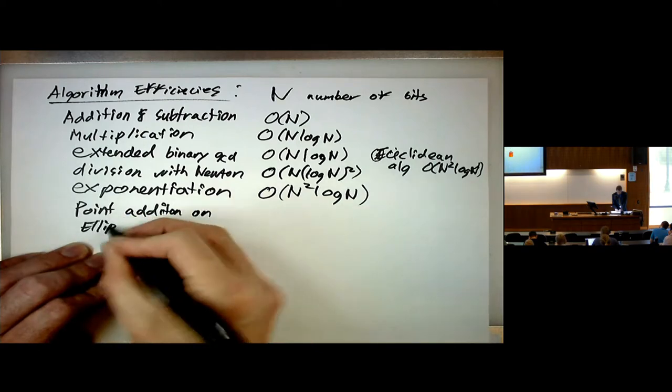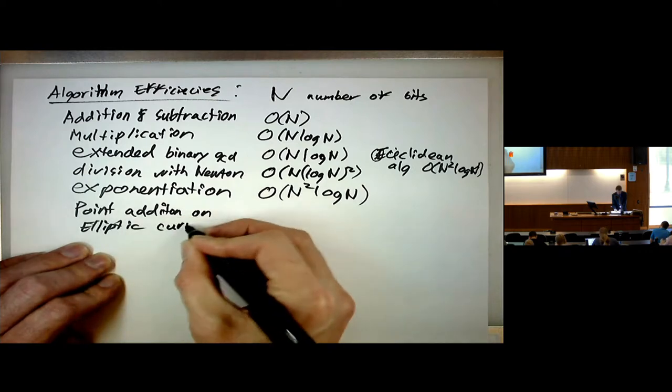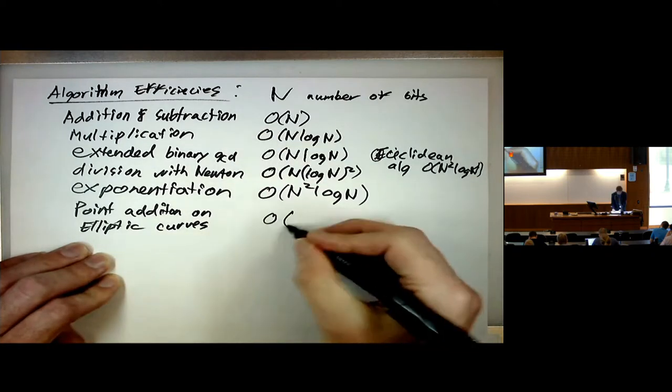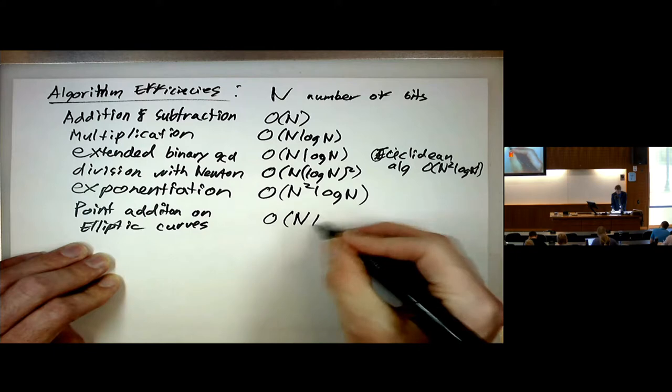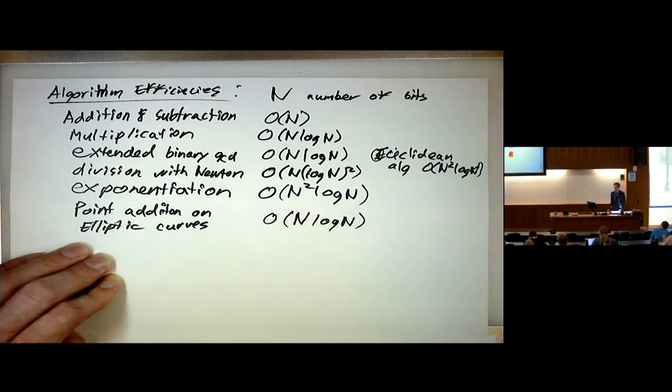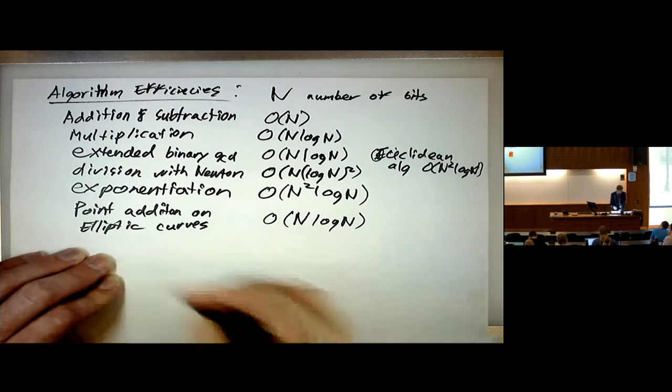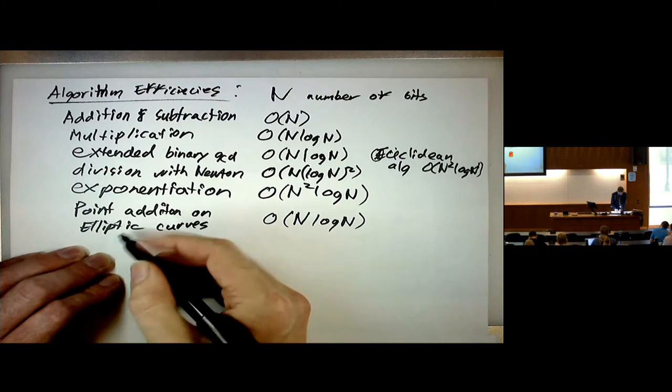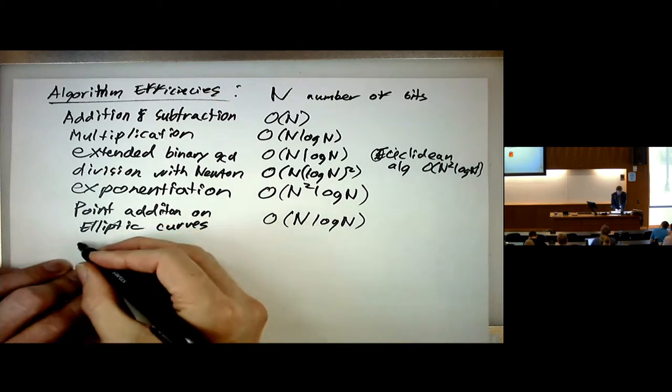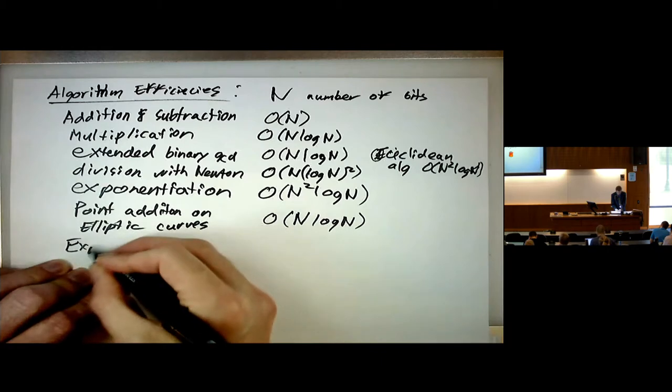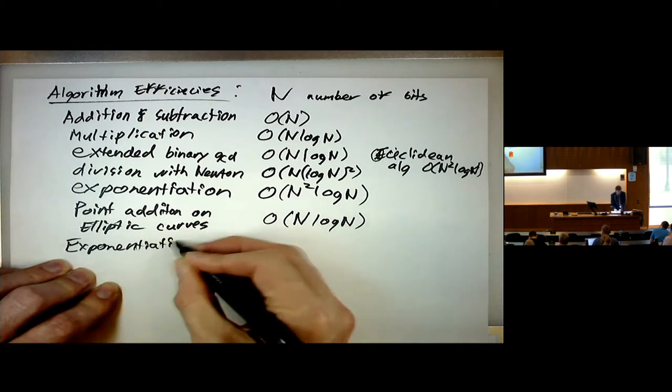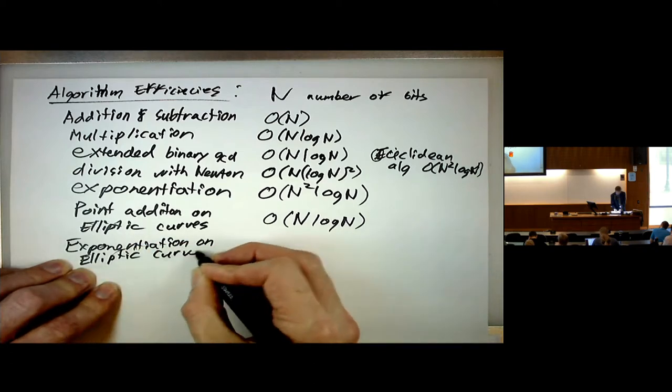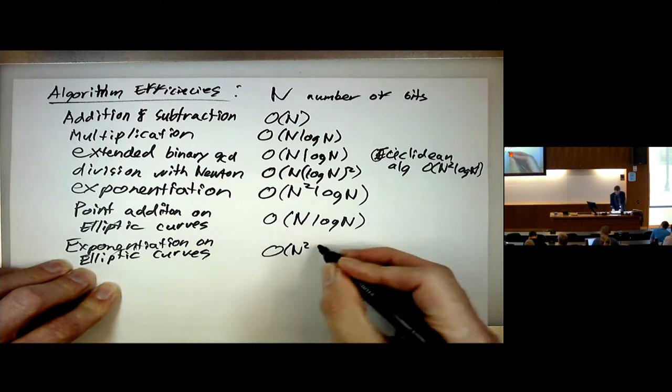Okay, so when I quote algorithm efficiencies, I prefer using the logarithm of the size of the number, essentially the number of bits. It's more telling because when you are plotting times from a computer, like if you run actual tests on the computer and plot a chart of how it grows when you increase the number of bits, that's exactly what you see.